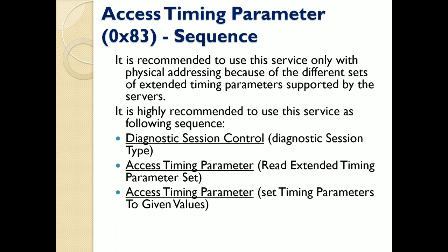The AccessTimingParameter service uses physical and functional addressing. For service ID 0x83 (AccessTimingParameter), it is recommended to use only physical addressing, because different ECU servers may support different sets of extended timing parameters.